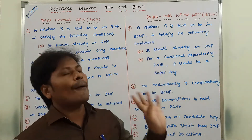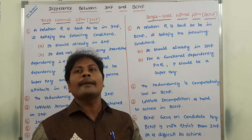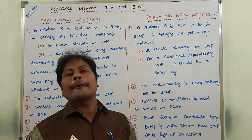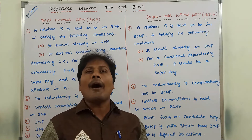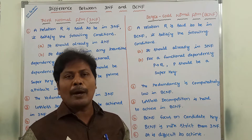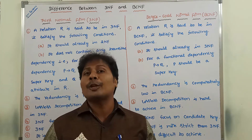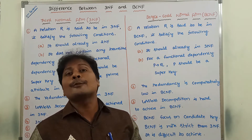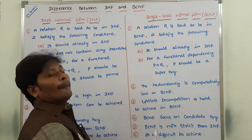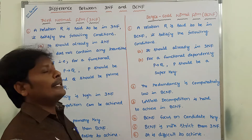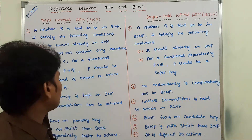Whereas in the case of BCNF, a relation R is said to be in Boyce-Codd normal form if and only if it satisfies two conditions. For a functional dependency P → Q, P should be a super key. Whenever these two conditions are satisfied by any relation, we can say that relation is in Boyce-Codd normal form.